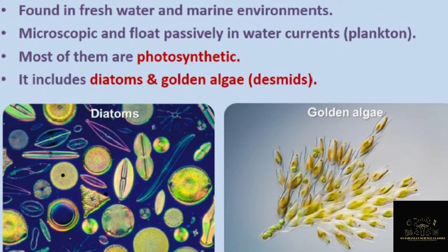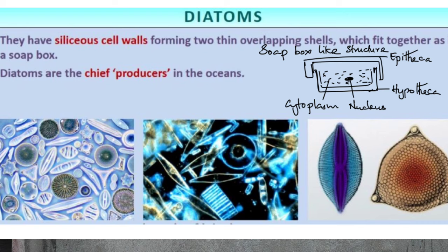Chrysophytes are mostly microscopic forms and they float passively in the water current. That means whenever the water moves, these Chrysophytes move along with it — they are not using their own energy to move. You cannot see them with the naked eye, and they are known as planktons because of this passive floating behavior.